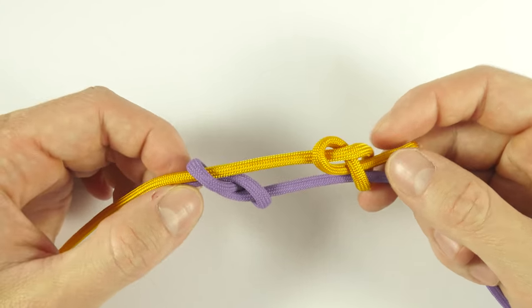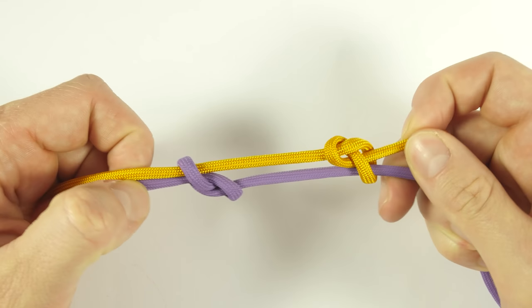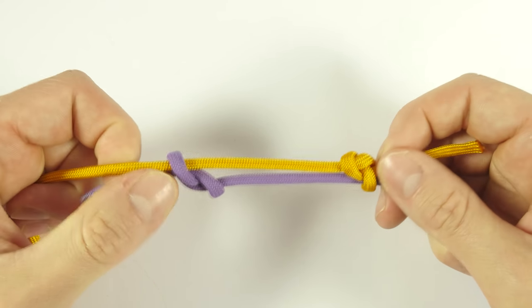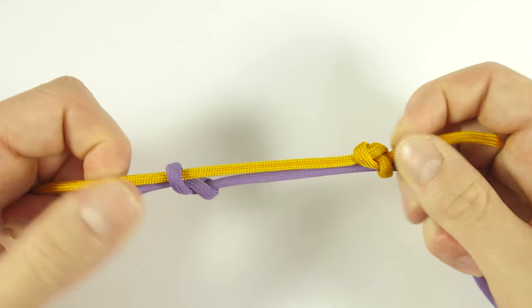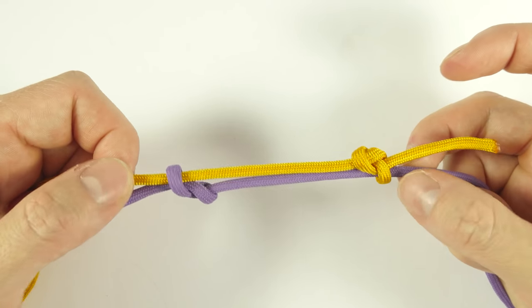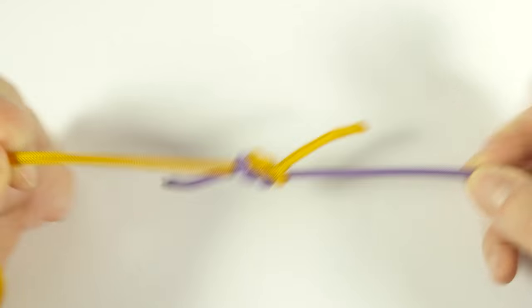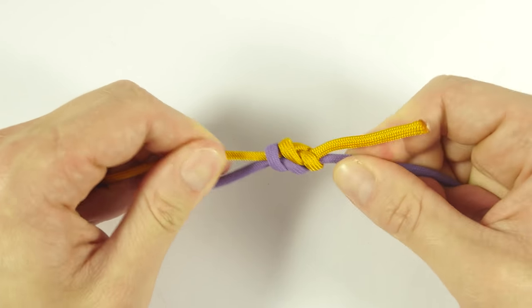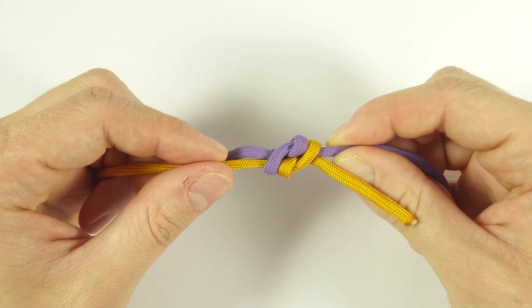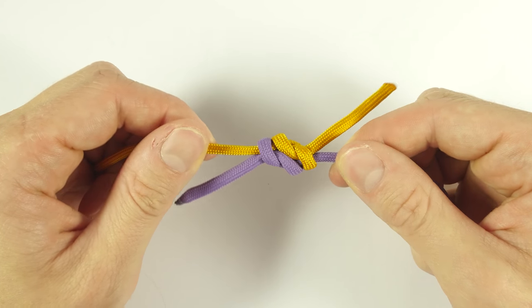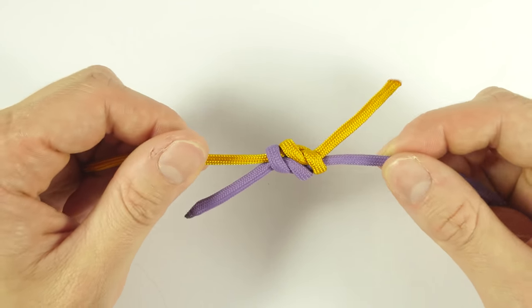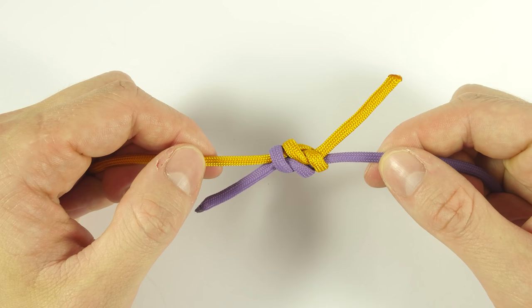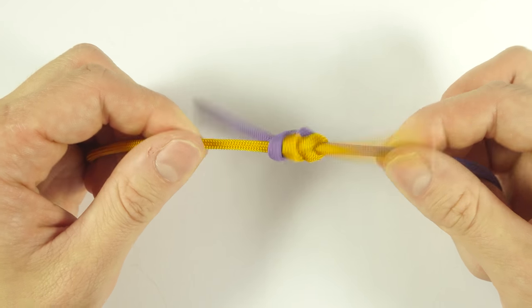Pull on the two working ends to tighten these two up, then pull on the two standing ends to bring them together. They should line up pretty neatly, and with this you have another way of joining two ends together using a figure 8 knot.